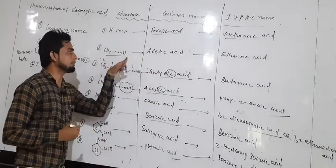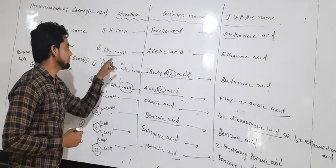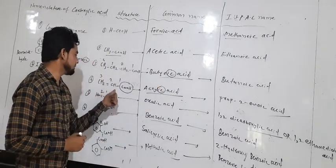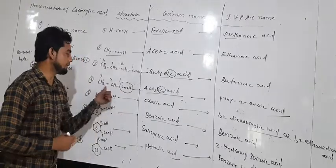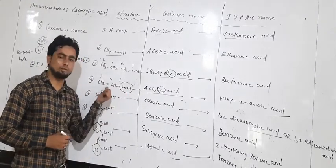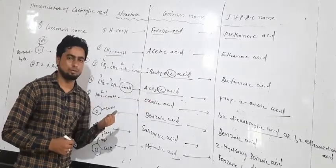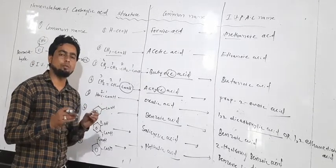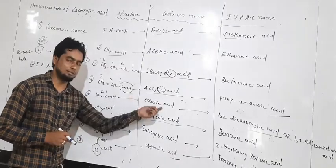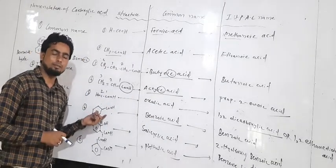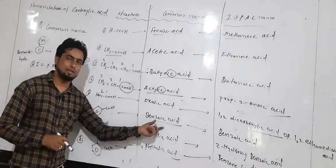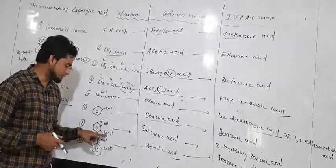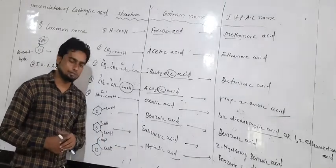Second, CH₃COOH is called acetic acid. Third, four-carbon compound is called butyric acid. Next, CH₂=CH-COOH contains two functional groups — one is carboxylic acid and the second is an alkene — and its special name is acrylic acid. Next, two oxalic groups attached together have the special name oxalic acid. Next, benzene attached to both a phenol and a carboxylic group has the special name salicylic acid.